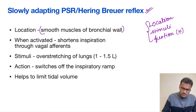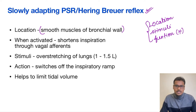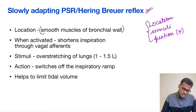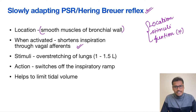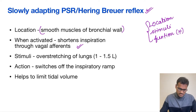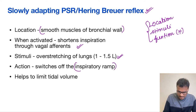The slowly adapting receptors are located in the smooth muscles of the bronchial wall. Whenever there is over-stretching of the lung — normal lung expansion does not activate them, but over-expansion does — these receptors get activated and through vagal afferents they stop the inspiratory ramps, thereby inhibiting over-stretching and causing expiration.